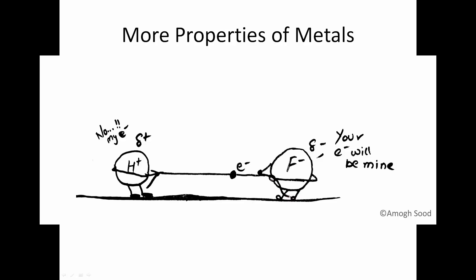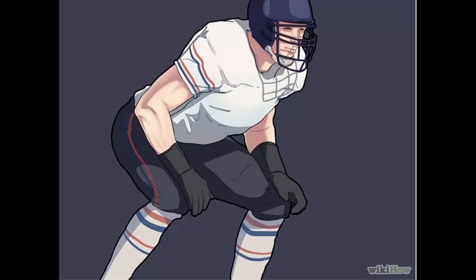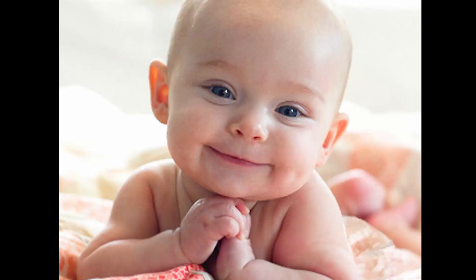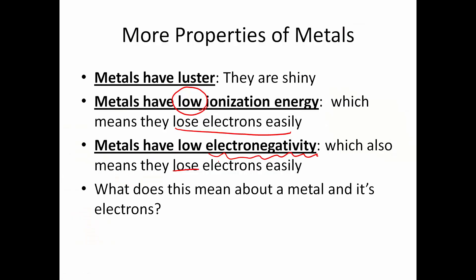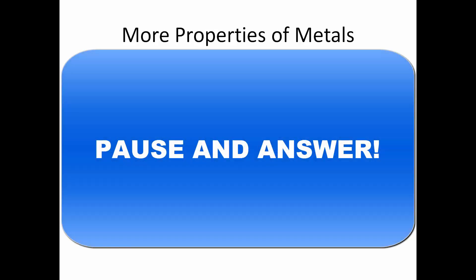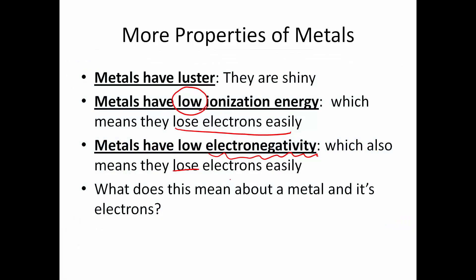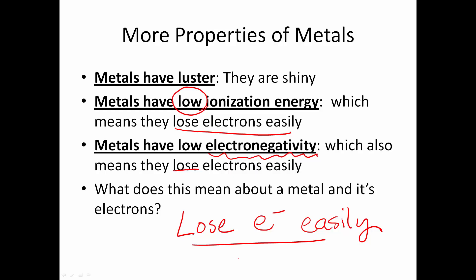It's all about a tug of war between two atoms in a bond — which one gets the electrons? Non-metals tend to be like a linebacker and metals are like a baby. Who wins that tug of war? The linebacker, not the baby. This means a metal is going to lose its electrons easily, and when it does, it becomes a positive ion. Metals form cations.